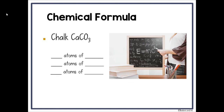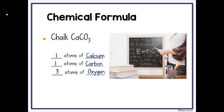Chalk is CaCO3 — Ca for calcium, C for carbon, and O for oxygen. Notice the lowercase A tells us it belongs with the C before it, so it's Ca for calcium. How many atoms? One atom of calcium, one atom of carbon, and three atoms of oxygen. The subscript 3 beside the O tells us there are three oxygen atoms; the others have no numbers, meaning one of each.